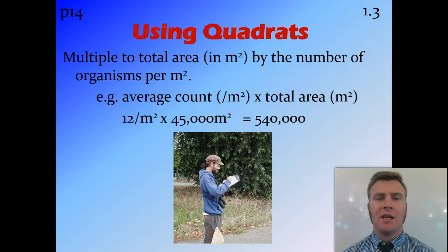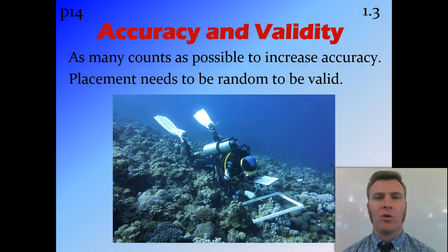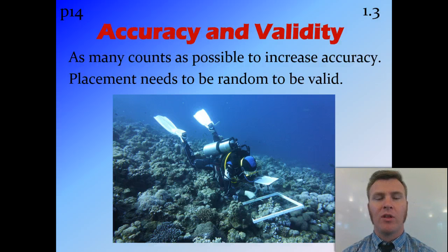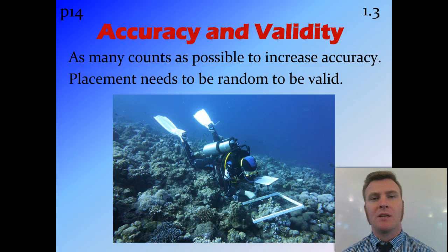You can see that counting just five squares is much easier than counting 540,000 things and remembering which ones you've already counted. To increase accuracy, you need as many different quadrats as possible spread throughout the area. For the results to be valid, placement must be completely random — not just places with a track or that are easy to reach — otherwise your results will be skewed and therefore not valid.